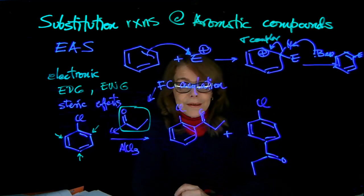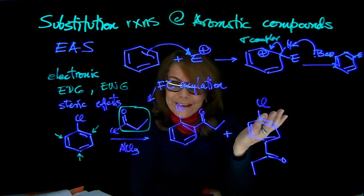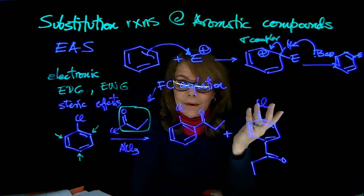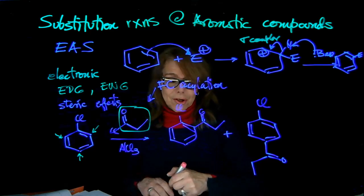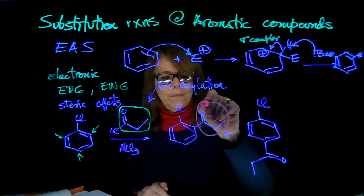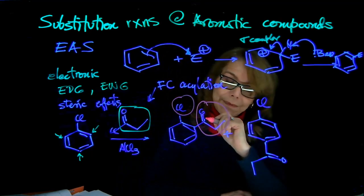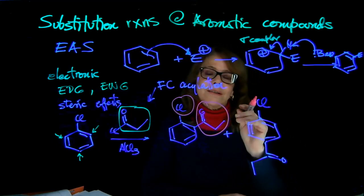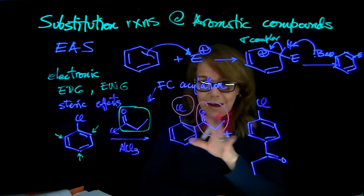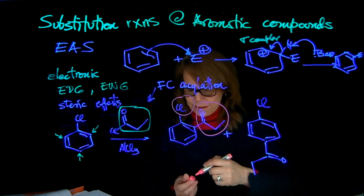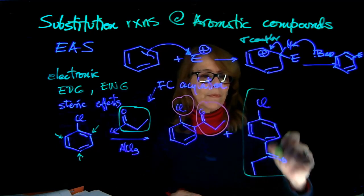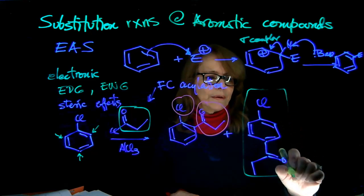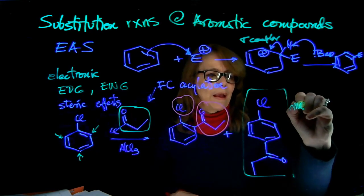Now, when you're predicting what is the major product, in that case, we need to consider steric effects. So notice, this group here is quite large. It is relatively close to that. Here, it's not. So less steric interactions. So this product, the para, is a major product because of steric effects. So we're going to say that's major.